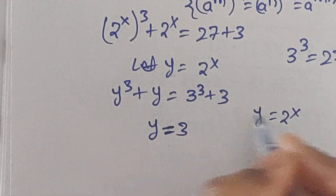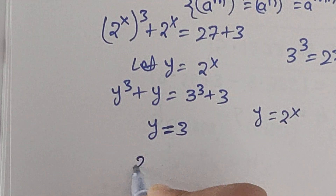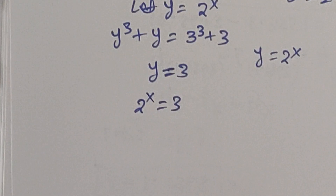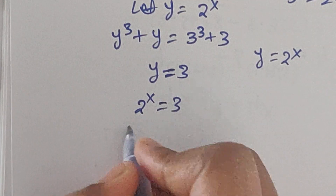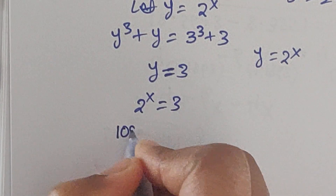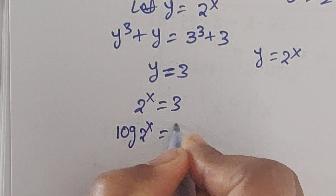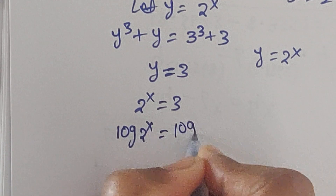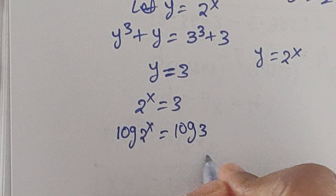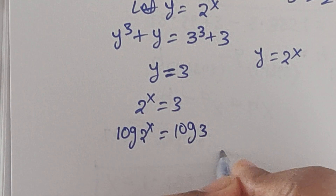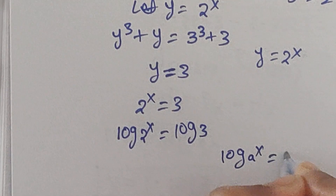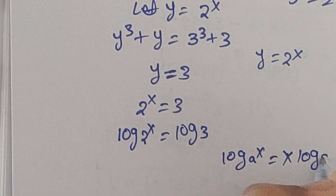Since y equals 2^x, we have 2^x equals 3. Now apply log on both sides: log(2^x) equals log 3. We can apply the formula log(a^x) equals x·log(a).